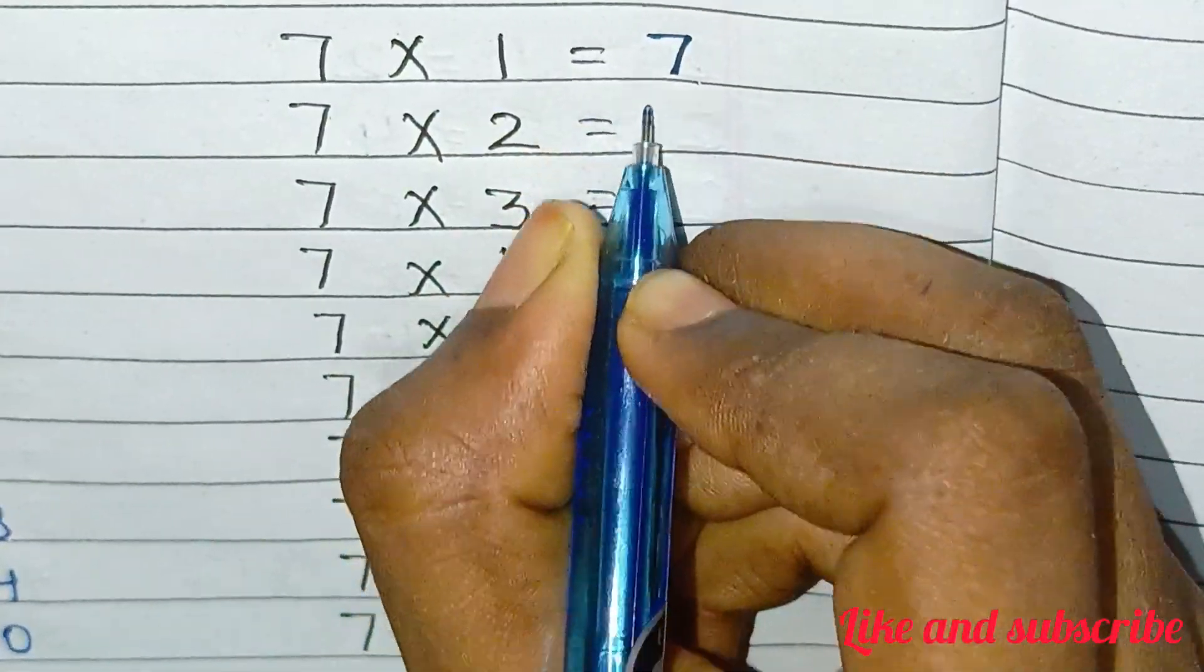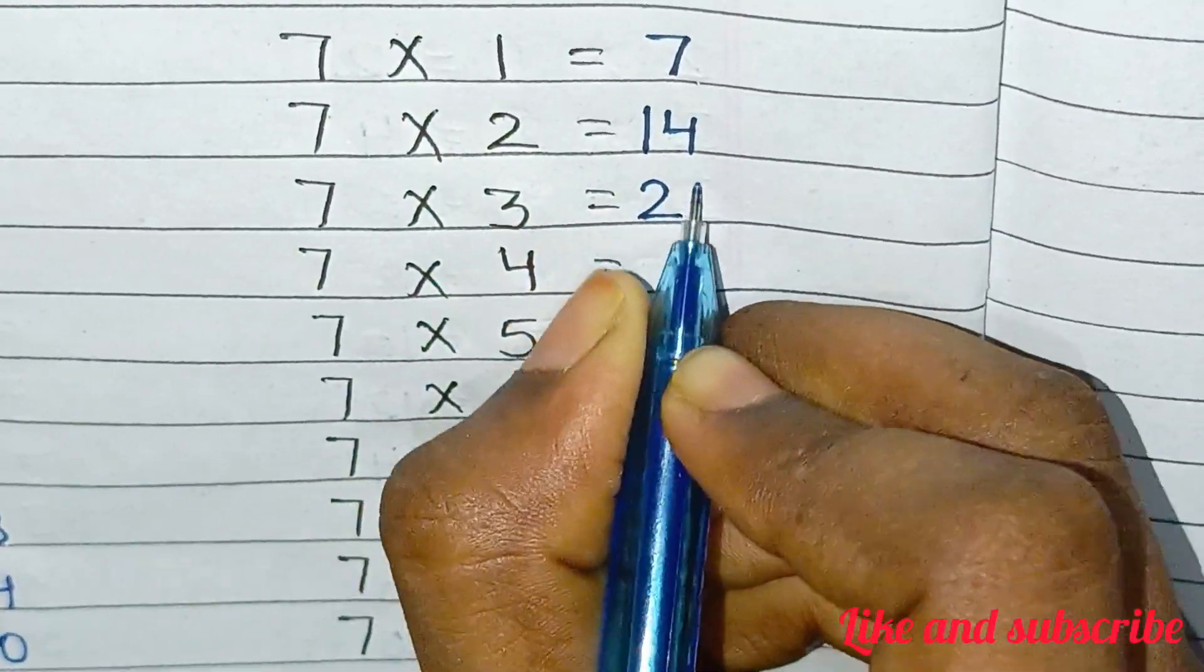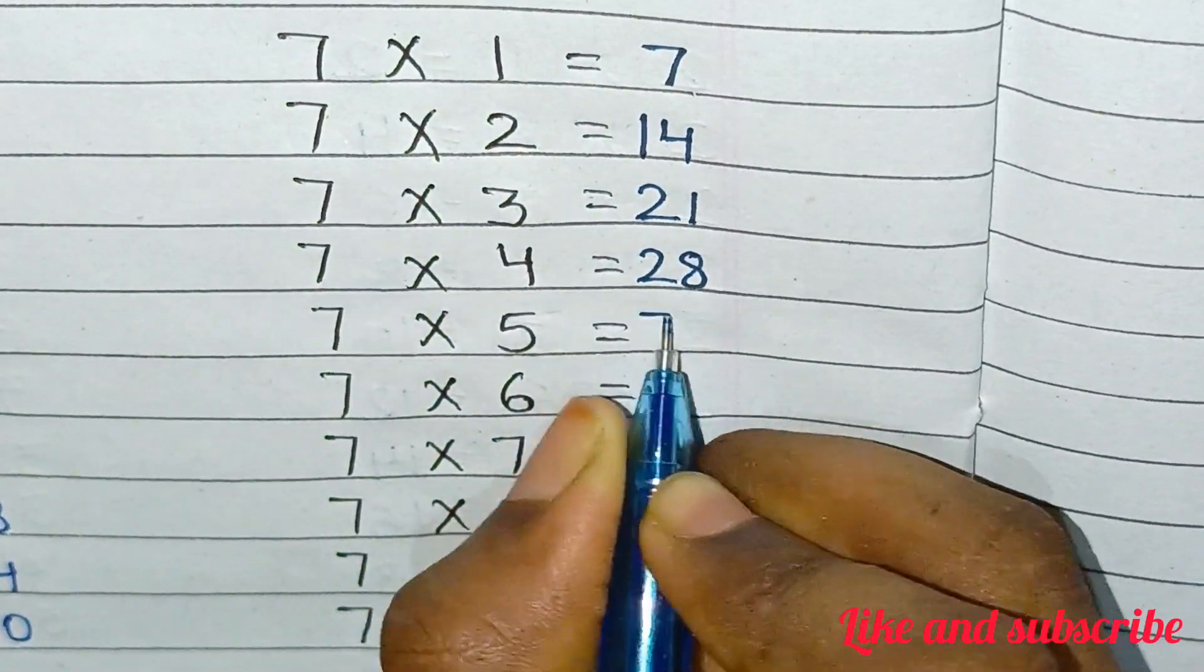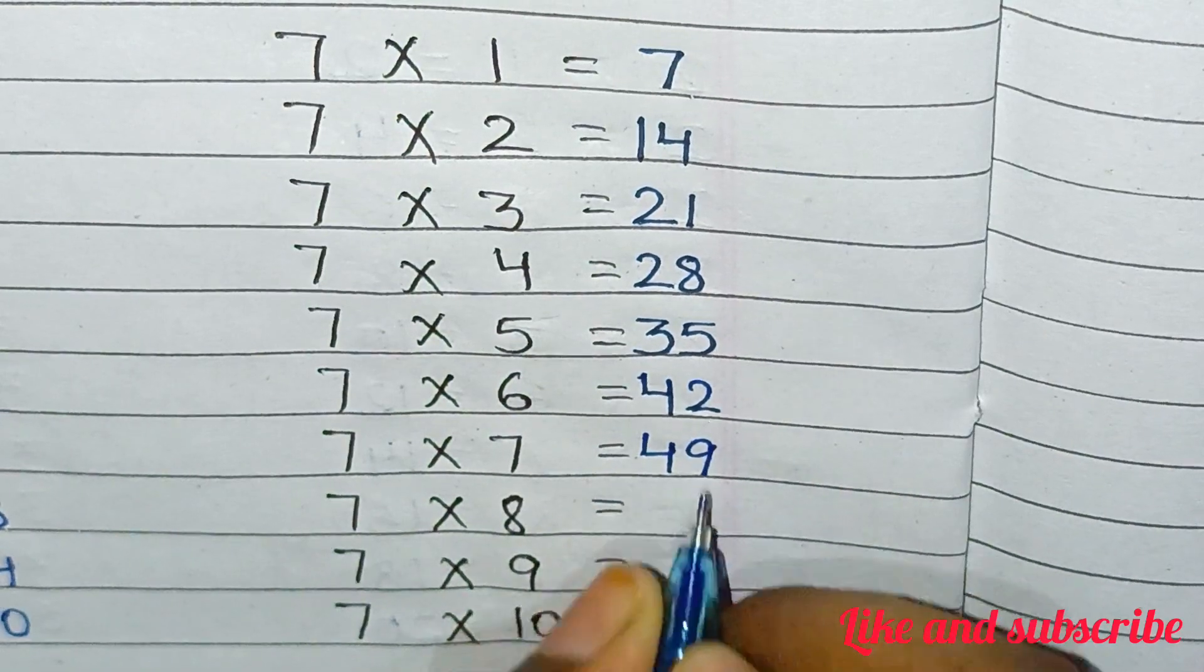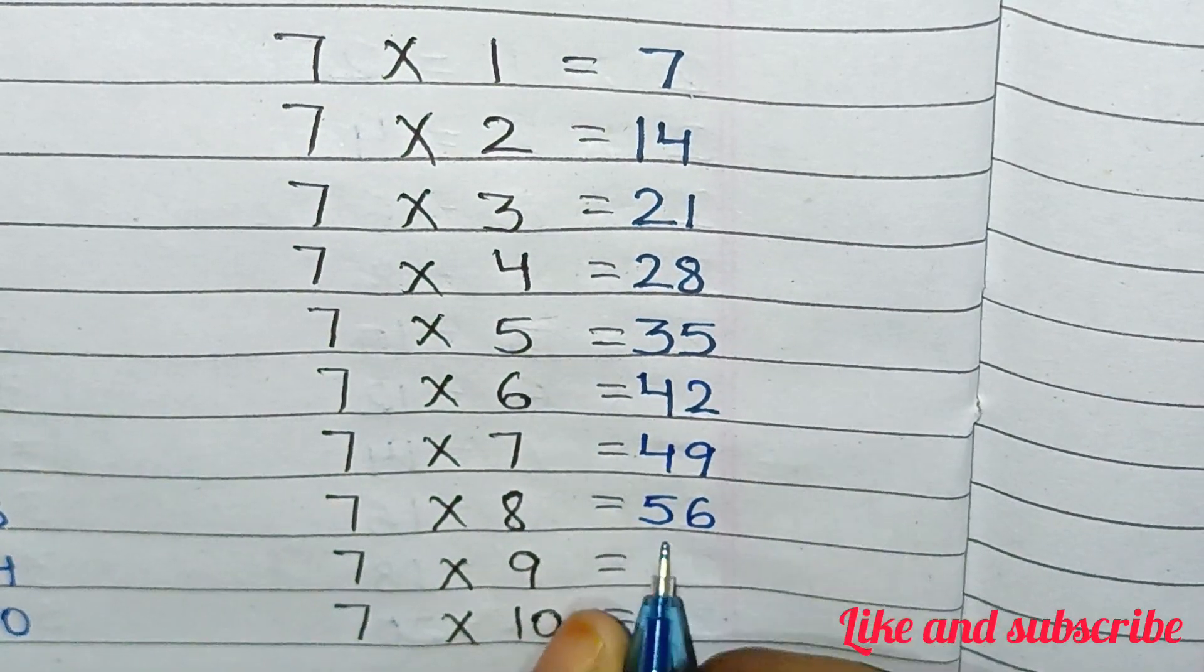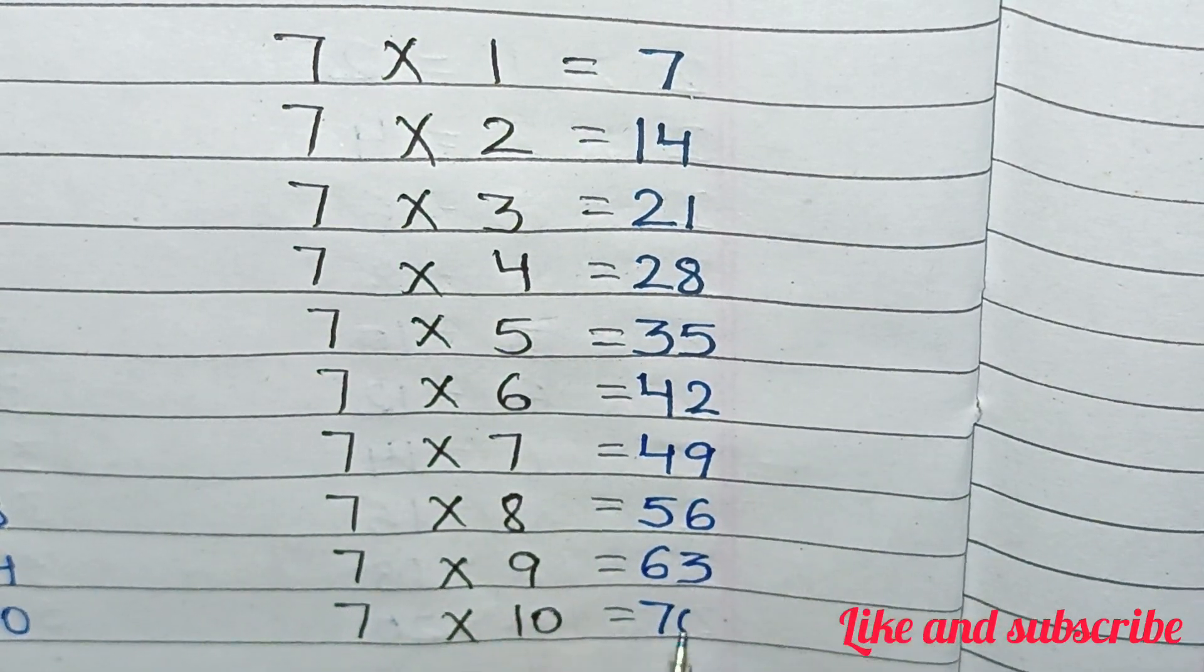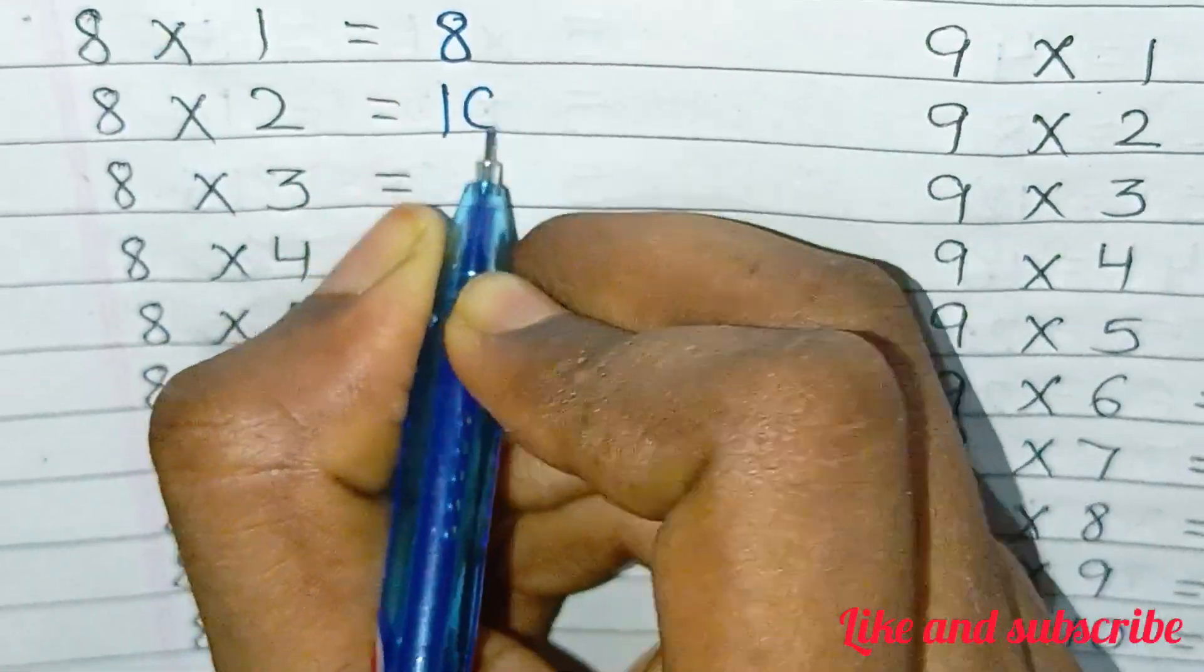Next, 7×1=7, 7×2=14, 7×3=21, 7×4=28, 7×5=35, 7×6=42, 7×7=49, 7×8=56, 7×9=63, 7×10=70.